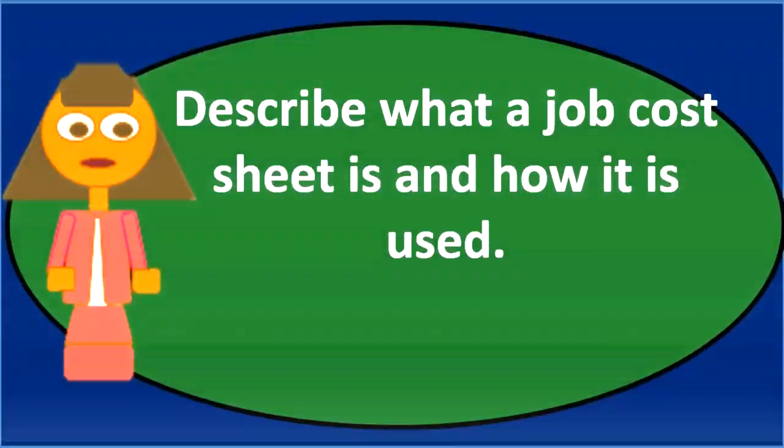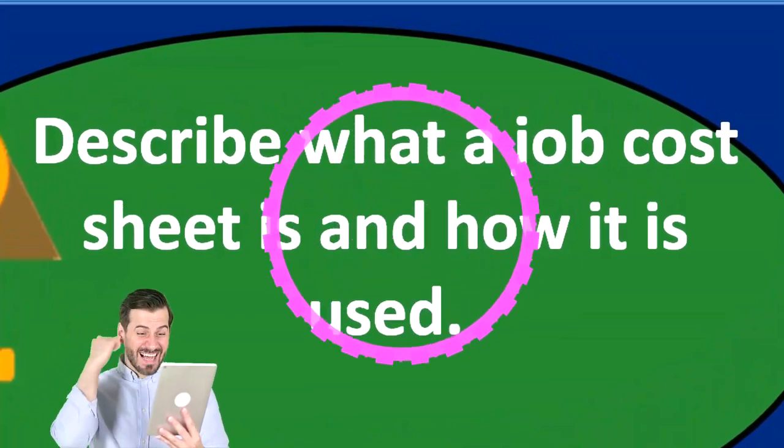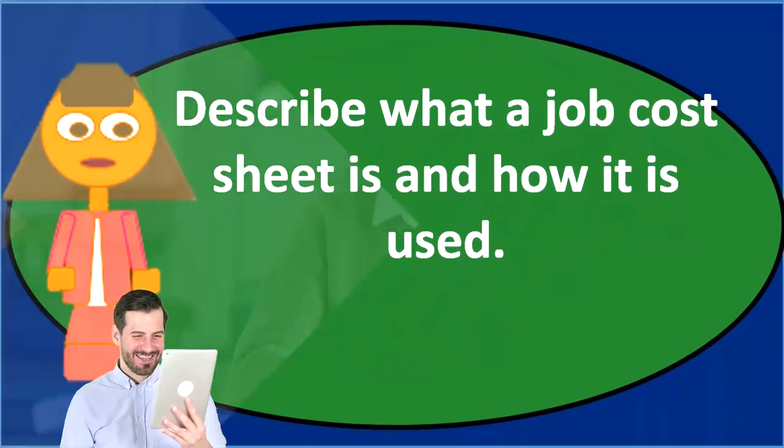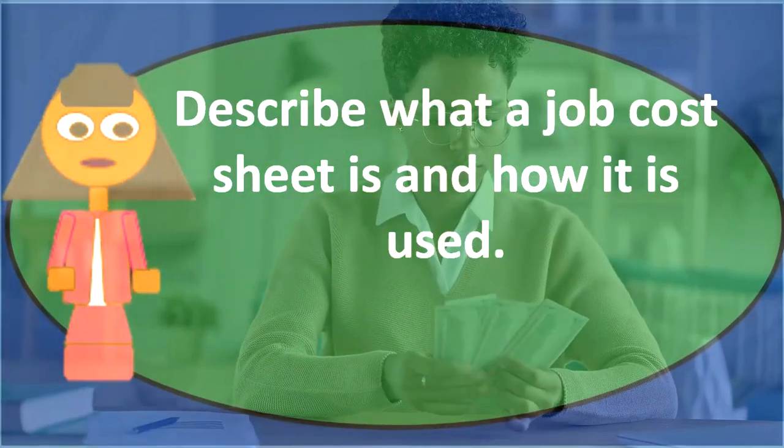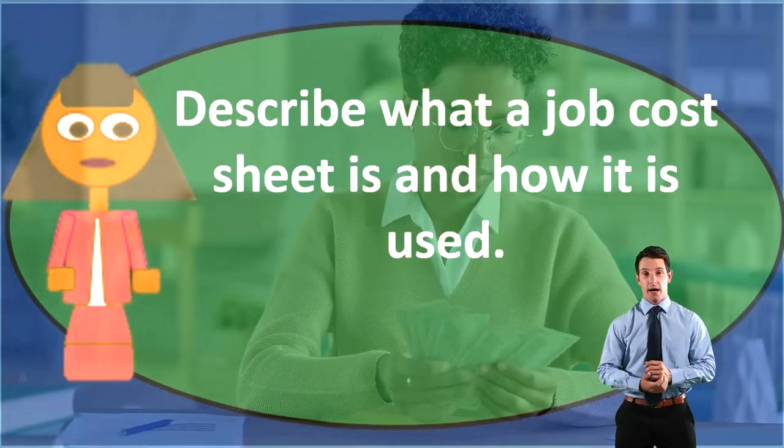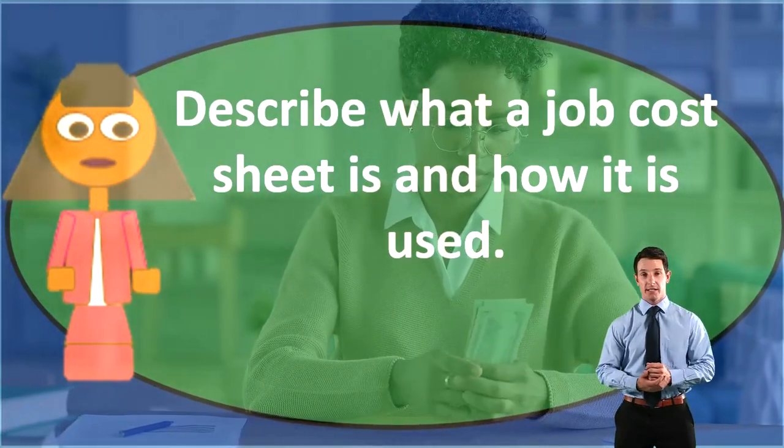The job sheets will give us detail by job. So it's going to break up this number by job for both work in process and finished goods, depending on if the job is open or closed, completed or not completed. And for each individual job, we'll then see how much of the direct labor goes to it, how much of the work in process, and how much overhead is applied to each individual job.